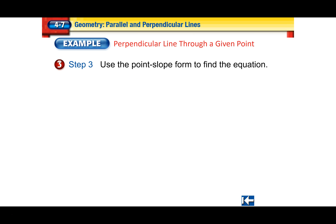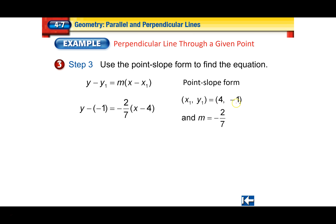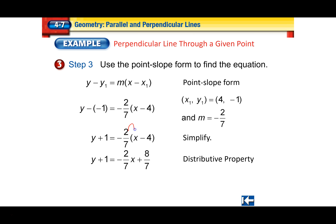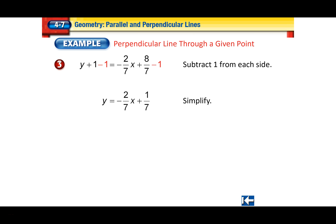Use point-slope form since we have a point and a slope. The point given was 4 and negative 1 with the perpendicular slope of negative 2 over 7. Punch those into point-slope form and simplify. Distribute: negative 2 over 7 times 4 over 1 — multiply across — gives 8 over 7. Then subtract 1 from both sides: 8 over 7 minus 7 over 7 equals 1 over 7, since the denominators are the same. The equation of the line comes out to that slope-intercept form.